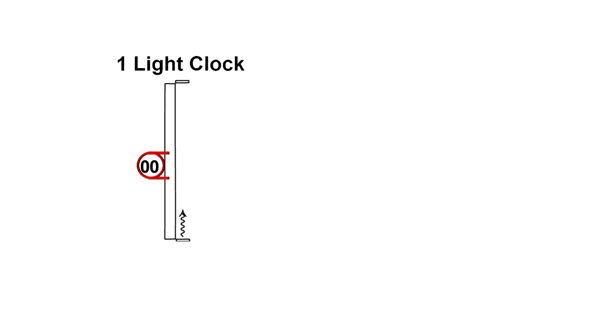Another consequence of the speed of light being a constant for all observers is that the size of an object shrinks along the line of motion when viewed by an observer in a different inertial frame.